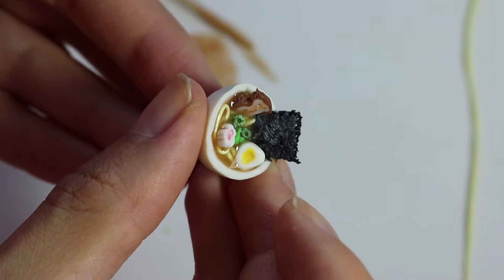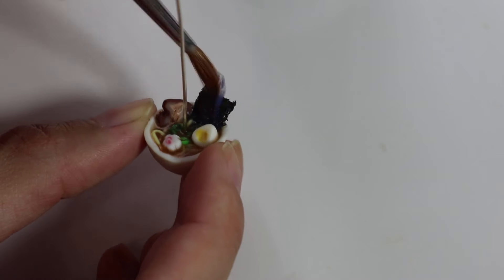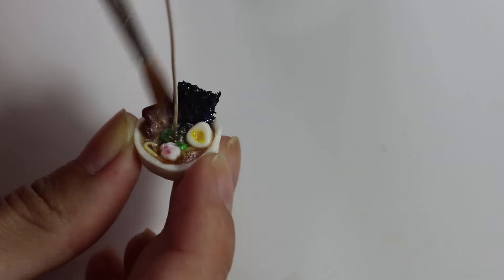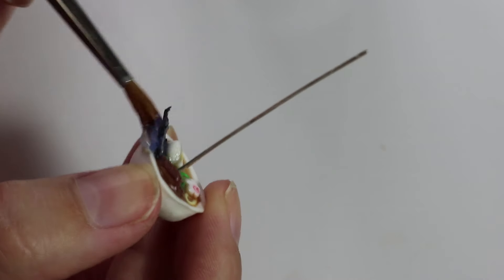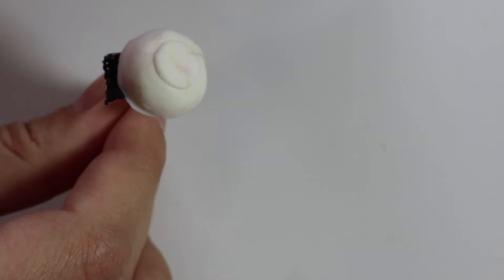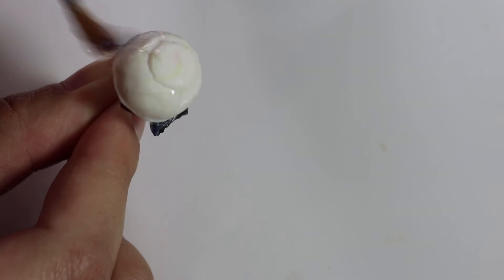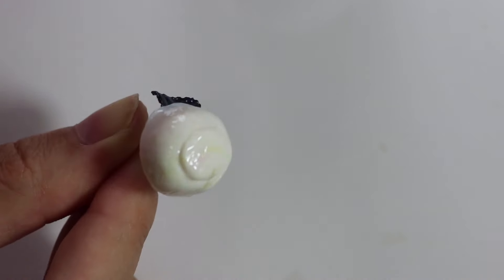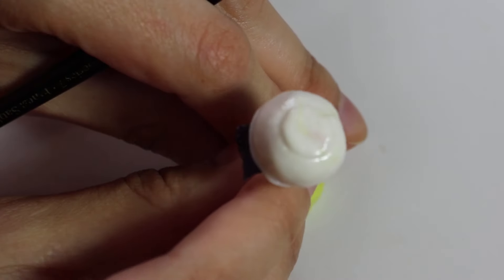And there we go. So to hold the head pin in place I just used a lot of excess clay and wrapped it around while it was baking. And then once you're done cover everything in glaze. And then let that dry.